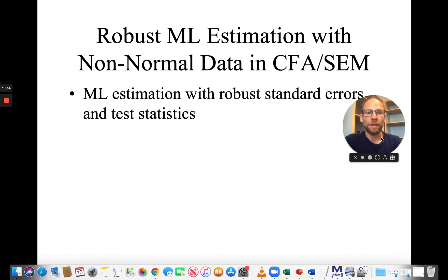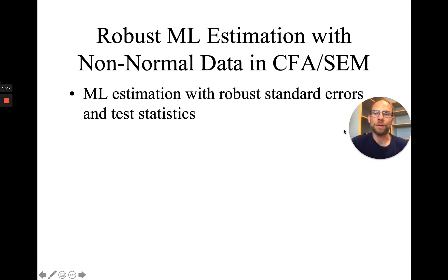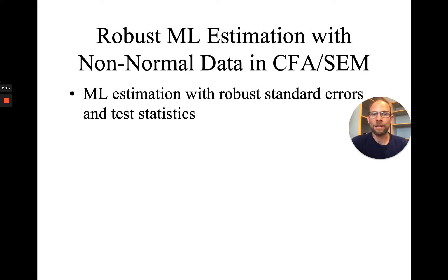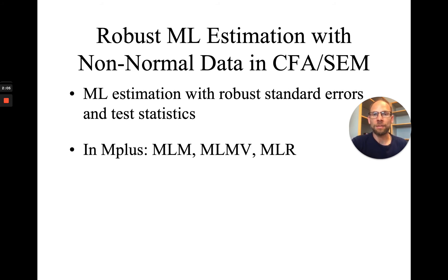The first thing — and maybe the easiest thing — that you could do is use maximum likelihood estimation but with robust standard errors and test statistics. That way, you're using the same estimation method and get the same parameter estimates as before. However, you get a correction for your standard errors so that the significance tests for your path coefficients can be trusted, and you get adjusted chi-square fit statistics. In Mplus, you have different robust estimators you could choose: MLM, MLMV, and MLR, which provide different adjustments.